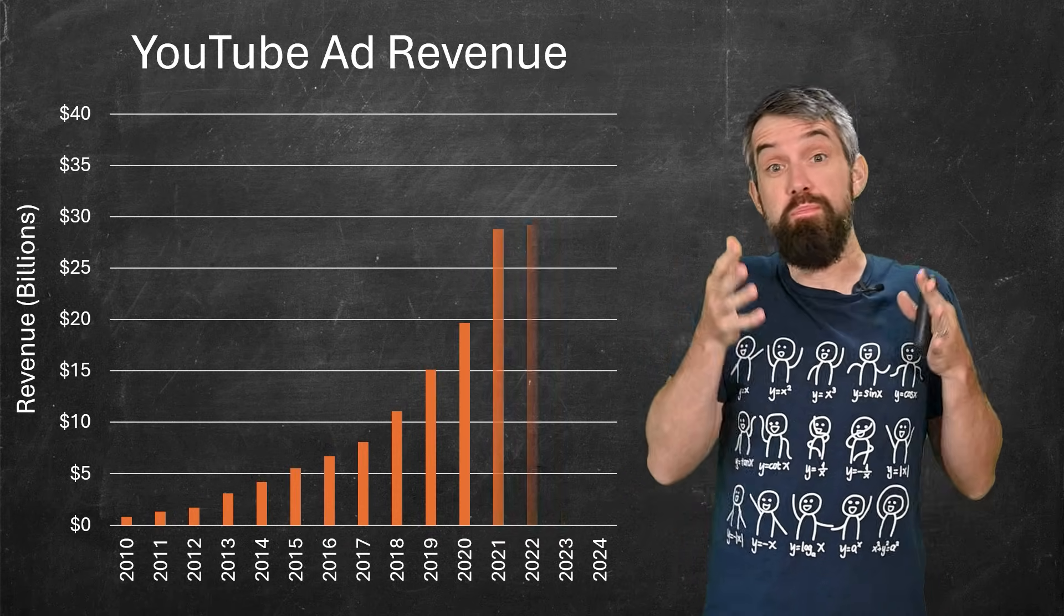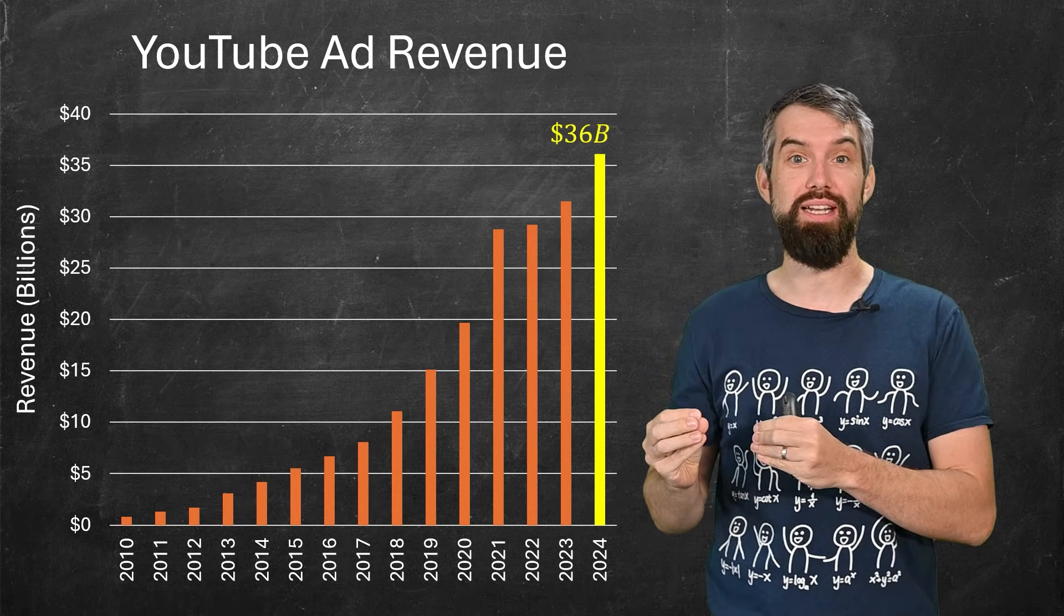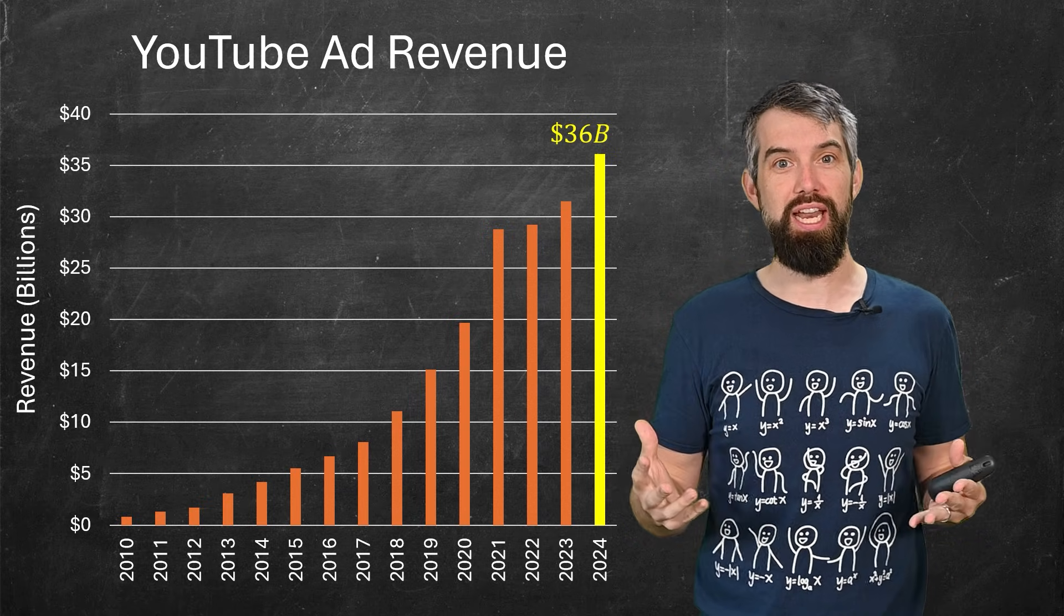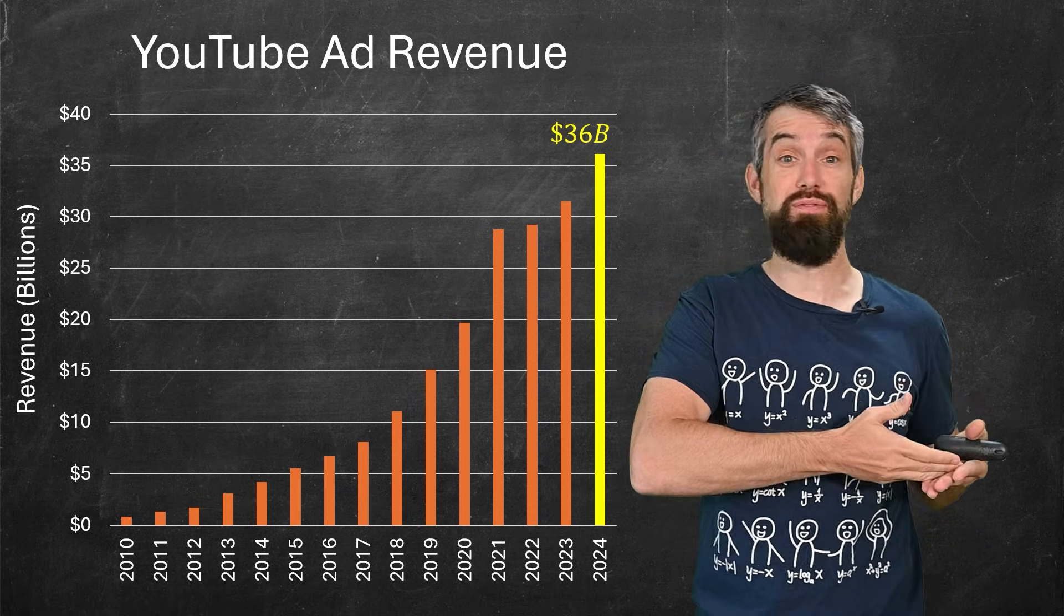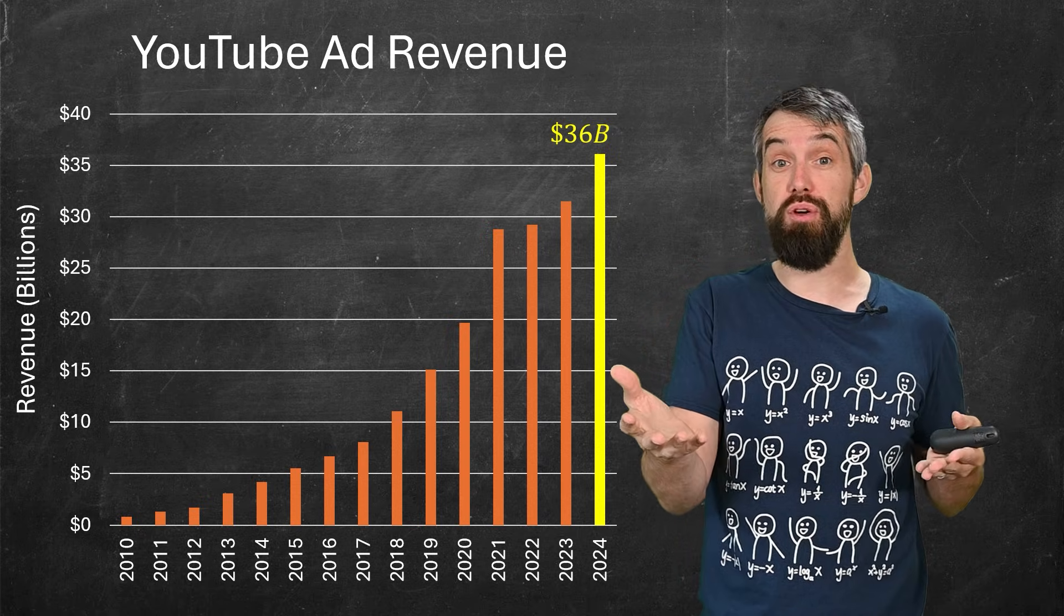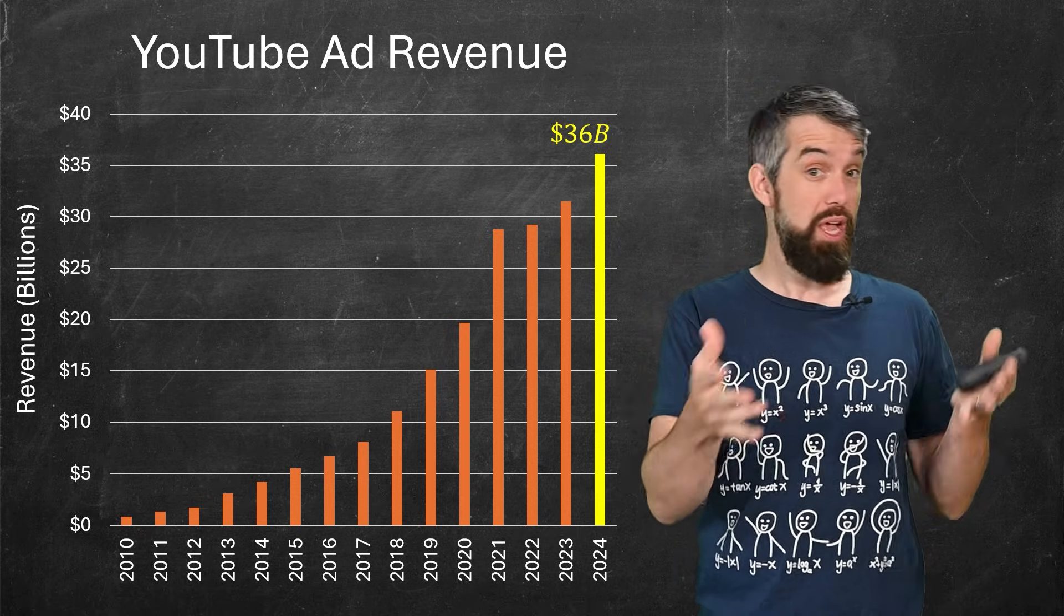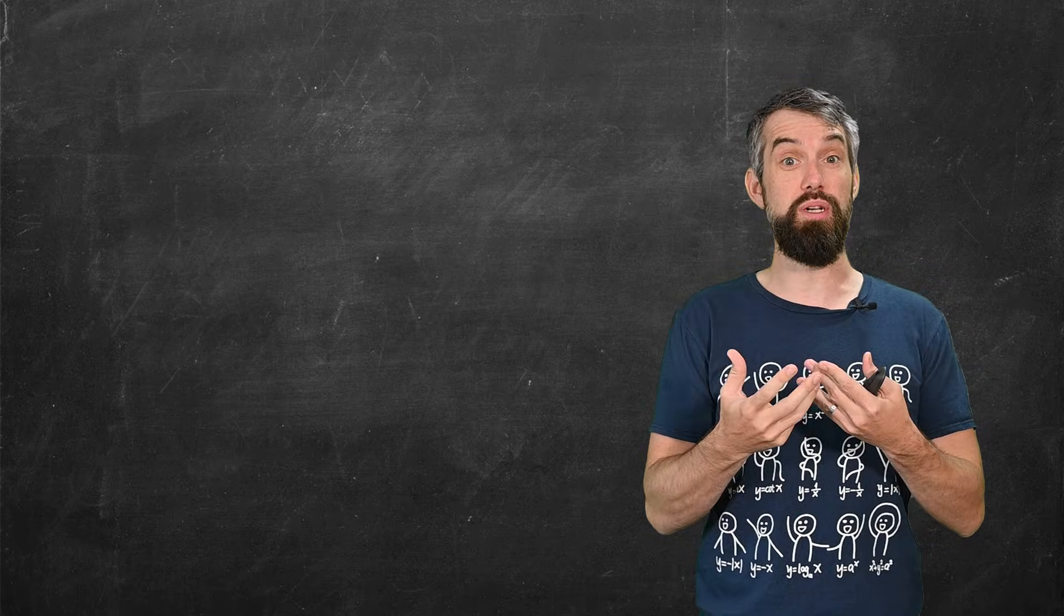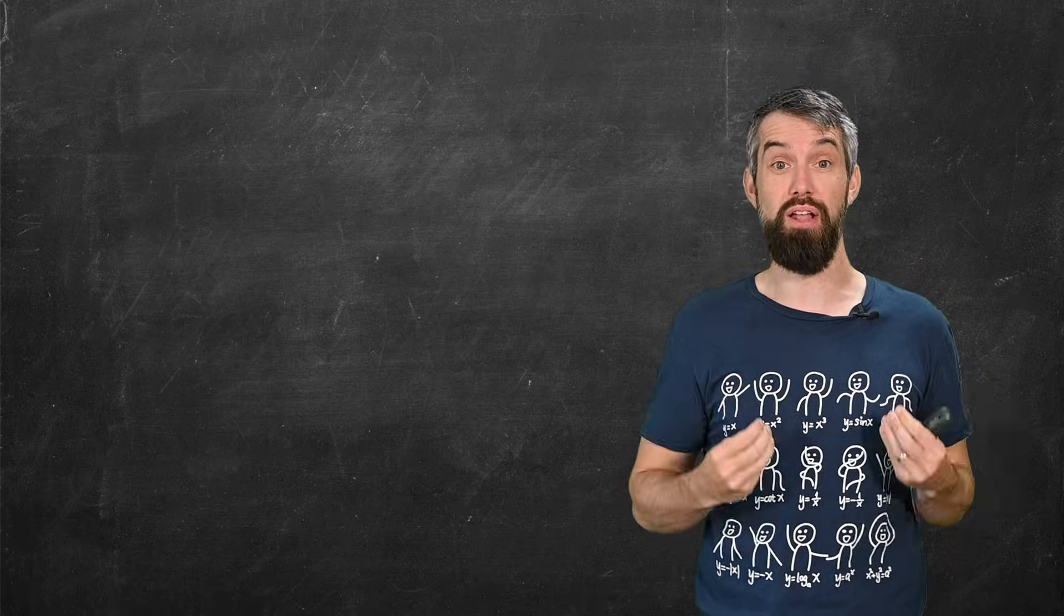Every year, YouTube makes over 30 billion dollars selling ads. But the real genius of Google's advertising machine is in the mathematics of how they actually sell all of those countless ads that makes up the majority of Google's revenue on YouTube and elsewhere, as well as supports millions of content creators like myself.